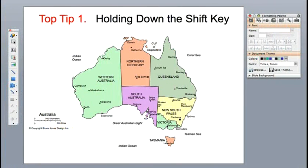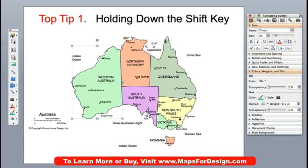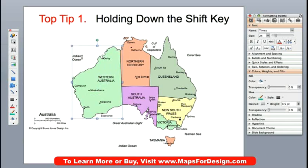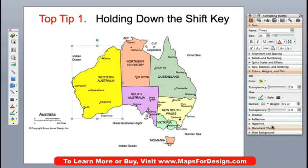We're going to be working today with one of our editable Australia maps. What editable means is that each element in our maps is a separate object. They can be highlighted with the little handles, pulled out, and we can go into our formatting palette and change colors to anything that we want. So it's a fully editable map — text and land.